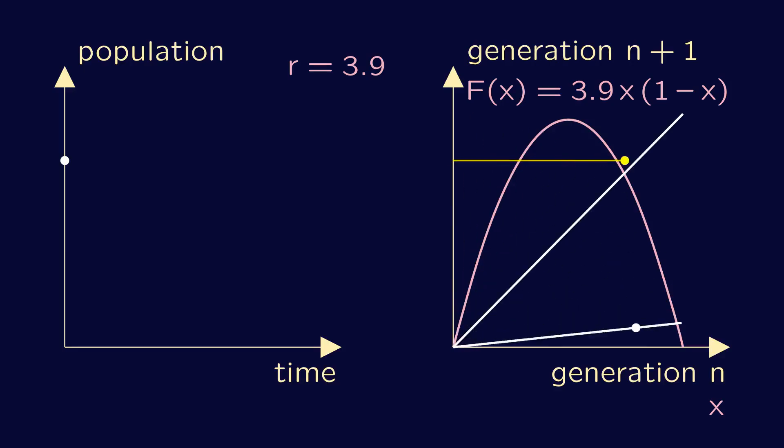Increasing r even further, the dynamics becomes chaotic. It never settles into a repeating pattern. And the cobweb diagram… well, it's a mess.